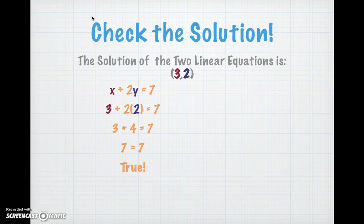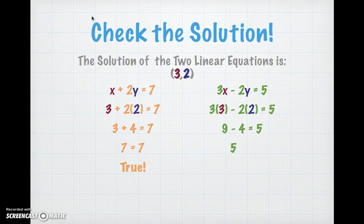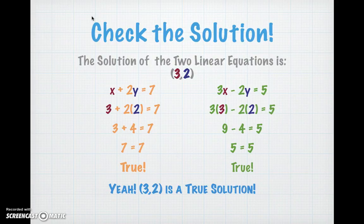We're going to do the same thing for the second equation. We take 3x minus 2y equals 5, and we input 3 for the x and 2 for the y. We get 3 times 3 minus 2 times 2 equals 5, which simplifies to 9 minus 4 equals 5, which simplifies to 5 equals 5. Thus, that one is true. Yay! That means that 3 and 2 is a true solution for those linear equations.